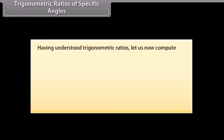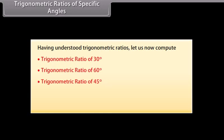Trigonometric ratios of specific angles. Having understood trigonometric ratios, let us now compute the trigonometric ratios of 30°, 60°, 45°, 0°, and 90°.